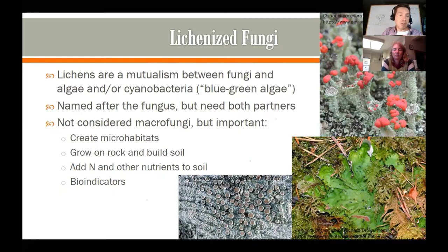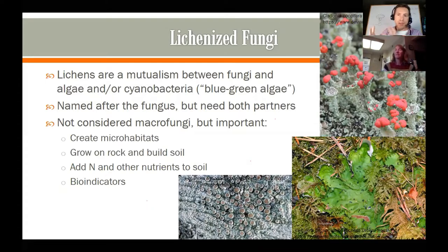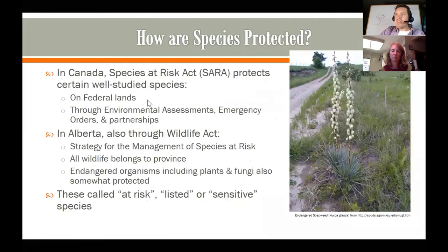Lichens also serve as important bioindicators. I just attended a webinar about lichens as bioindicators — especially when thinking about the effects of air pollution. Lichens are not taking anything from what they're growing on; instead they are absorbing all their nutrients, all their water, everything from dust and what's dissolved in rainwater. So when air pollution is happening, certain species that are more sensitive to particular pollutants in the air will be quite sensitive indicators. We could do a whole talk about lichens.